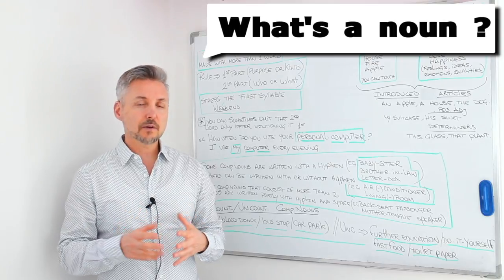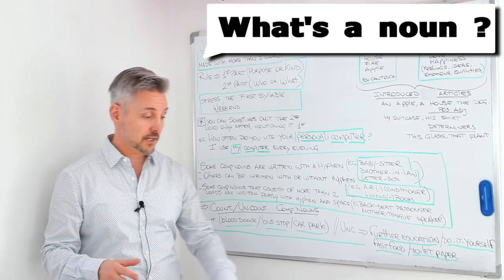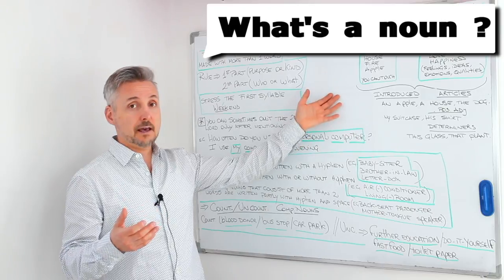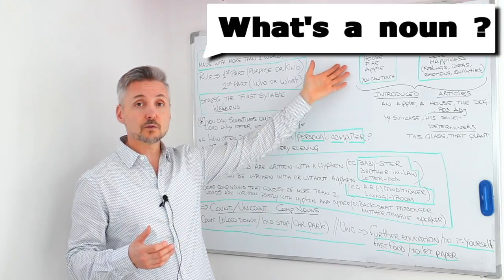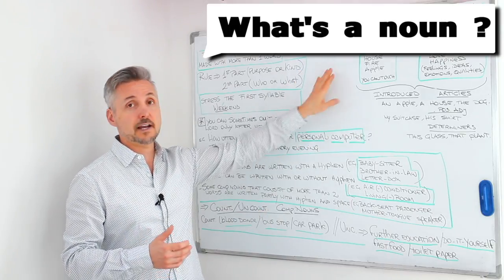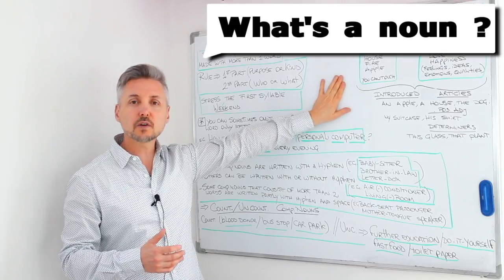A concrete noun is something that you can touch. For example, a table, a whiteboard, a house, a fire, an apple. Things that you can touch.